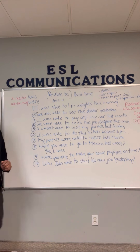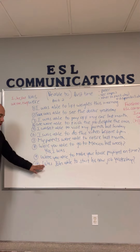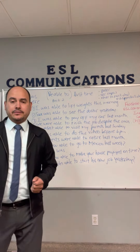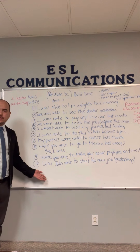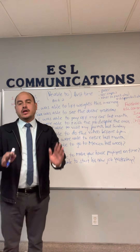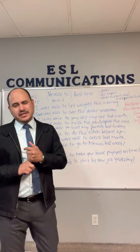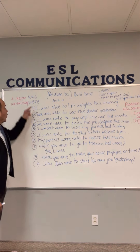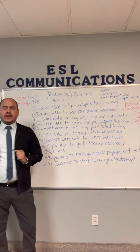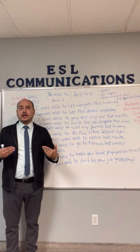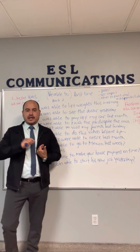Last question — singular: Was John able to start his new job yesterday? ¿Pudo John empezar su nuevo empleo ayer? Answer: Yes, he was. So, to summarize — the past of 'be able to' uses was/were: was able to, were able to. Let's practice.